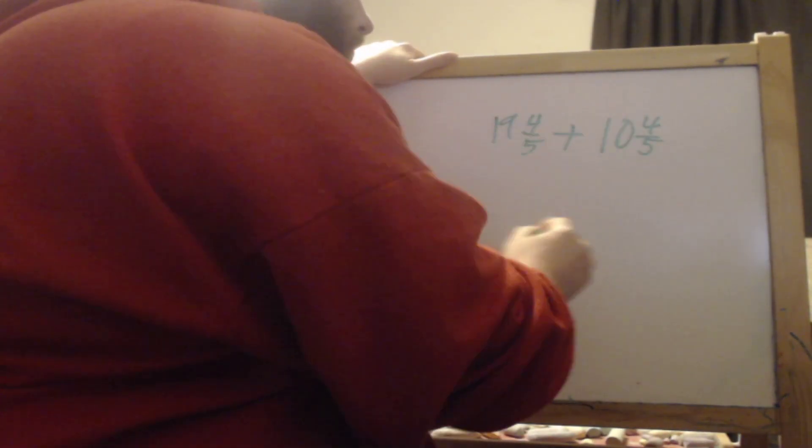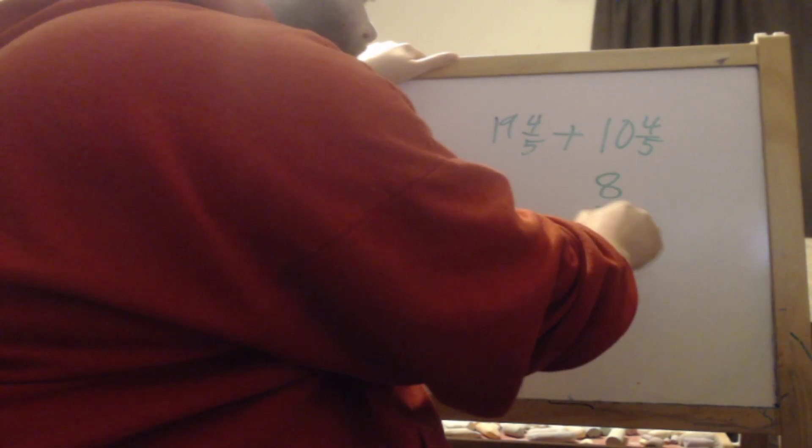So it is just 19 and 4/5 plus 10 and 4/5. We can add the fractions first. So 4 plus 4 is 8/5.